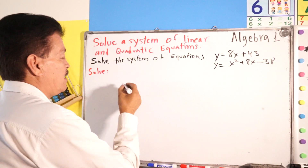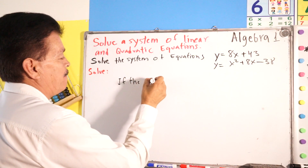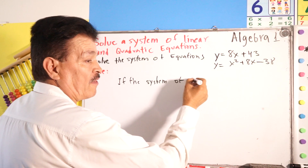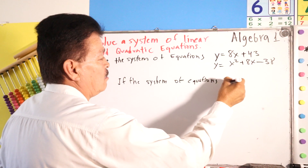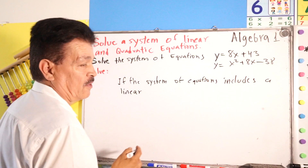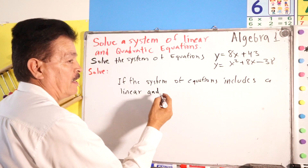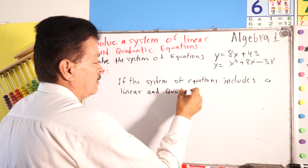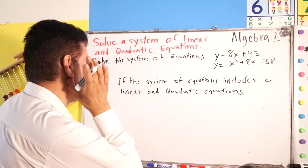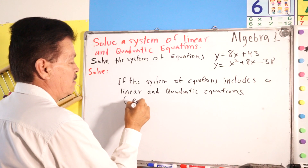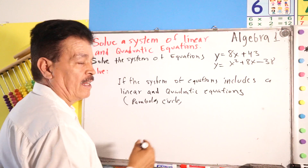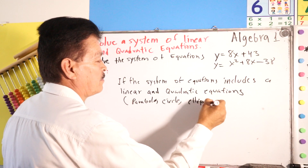Let's remember this idea. If the system of equations includes a linear equation — like this first one — and a quadratic equation, such as a parabola, a circle, an ellipse, or a hyperbola...